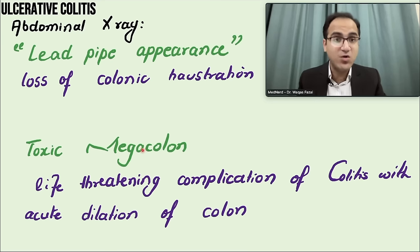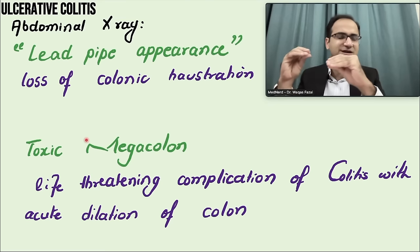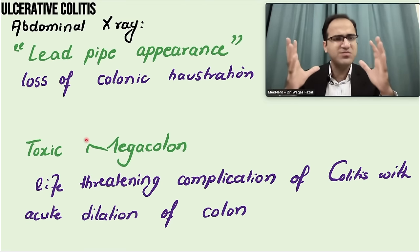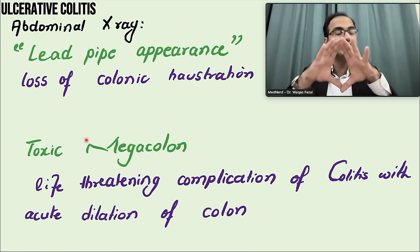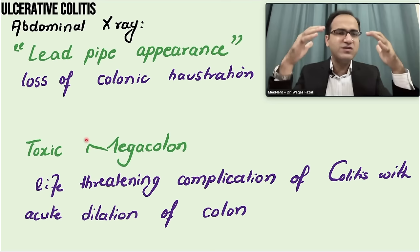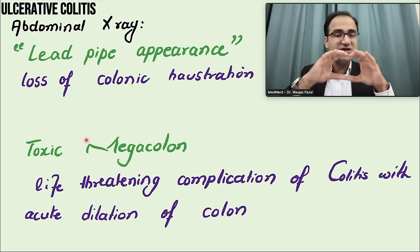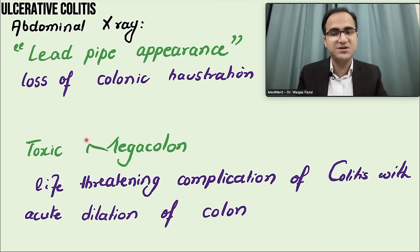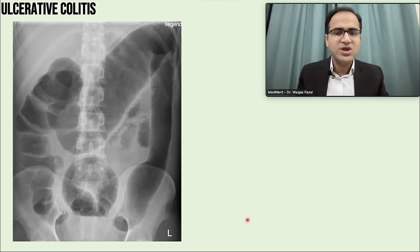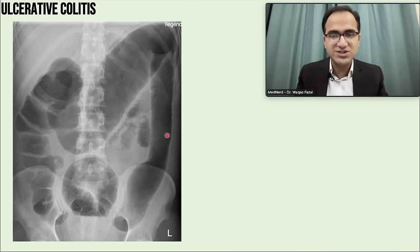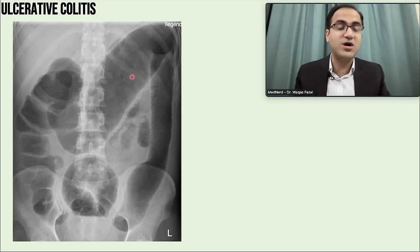Toxic megacolon is an important complication of ulcerative colitis. The normal motility of the large intestine is lost due to inflammation, the gut goes into stasis, feces accumulate and produce gas, causing excessive dilation of the colon to greater than 6 cm. It is a life-threatening complication with acute dilation of the colon due to loss of motility.